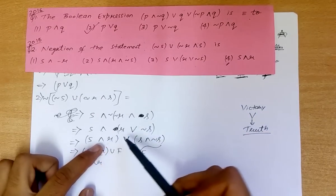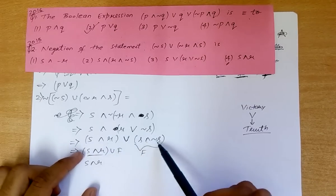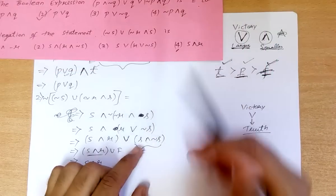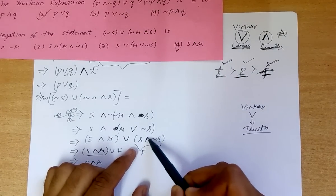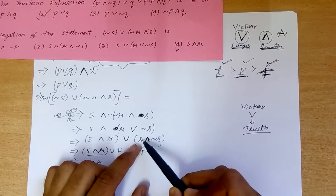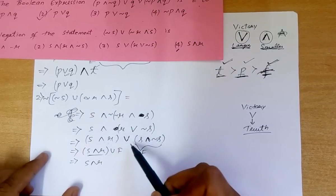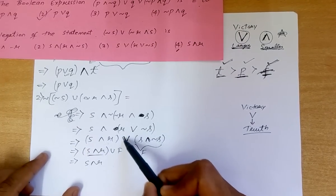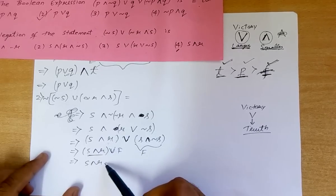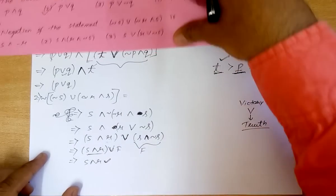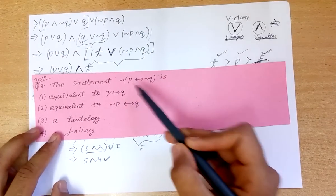So we get S and (R or negation of S). Applying the distributive law: S and R, or S and negation of S. S and negation of S is always false — that's a contradiction. So we have S and R OR False. Using the OR trick, we choose the larger set, which is S and R.